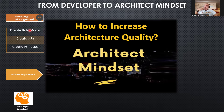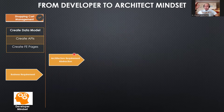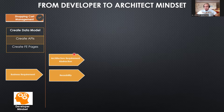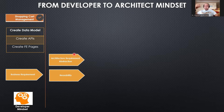Let's move forward to how the architect should think about this solution. Number one, the architect should think about architecture requirements abstraction. Abstraction means removing the details of the business requirements in order to increase the reusability of the solution. The architect focuses on reusability — creating a core infrastructure that can be reused in the future by other modules or solutions. This positively impacts cost and maintainability of the overall solution.